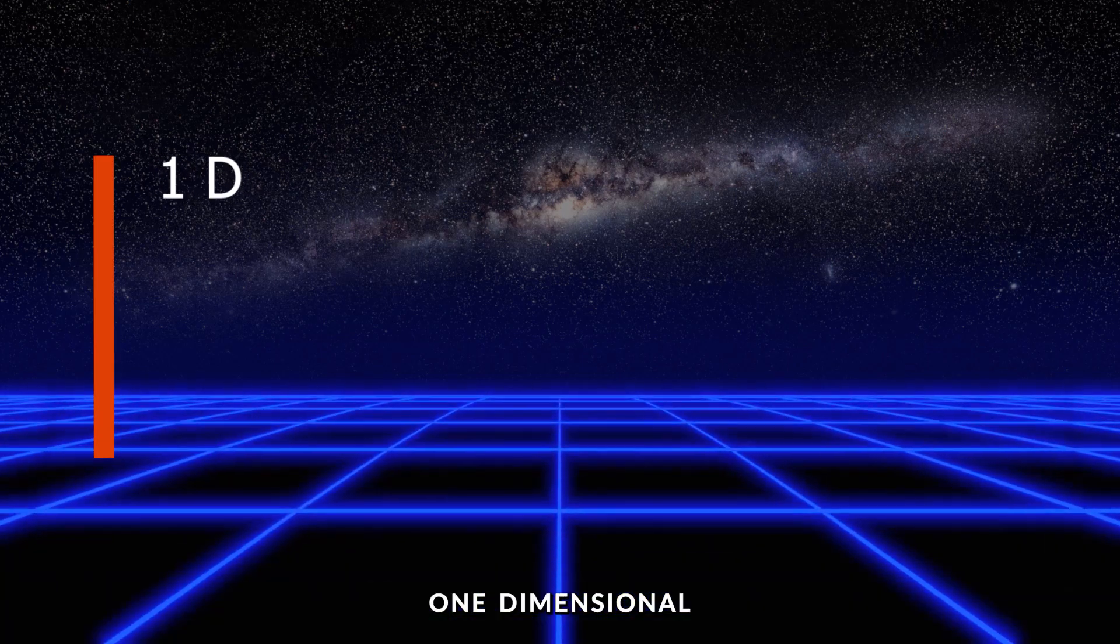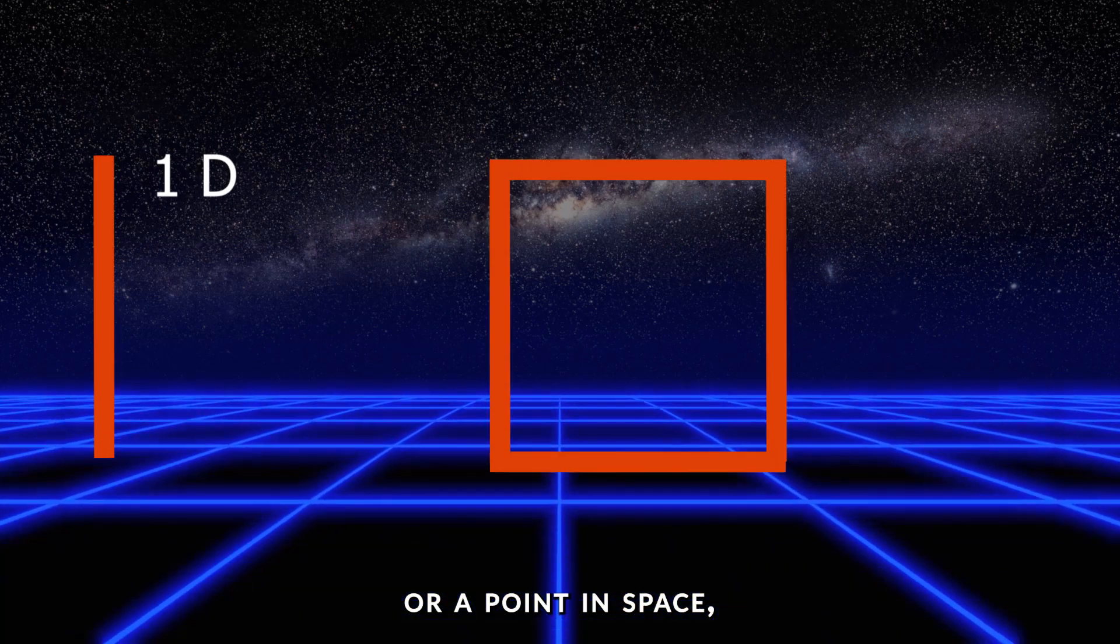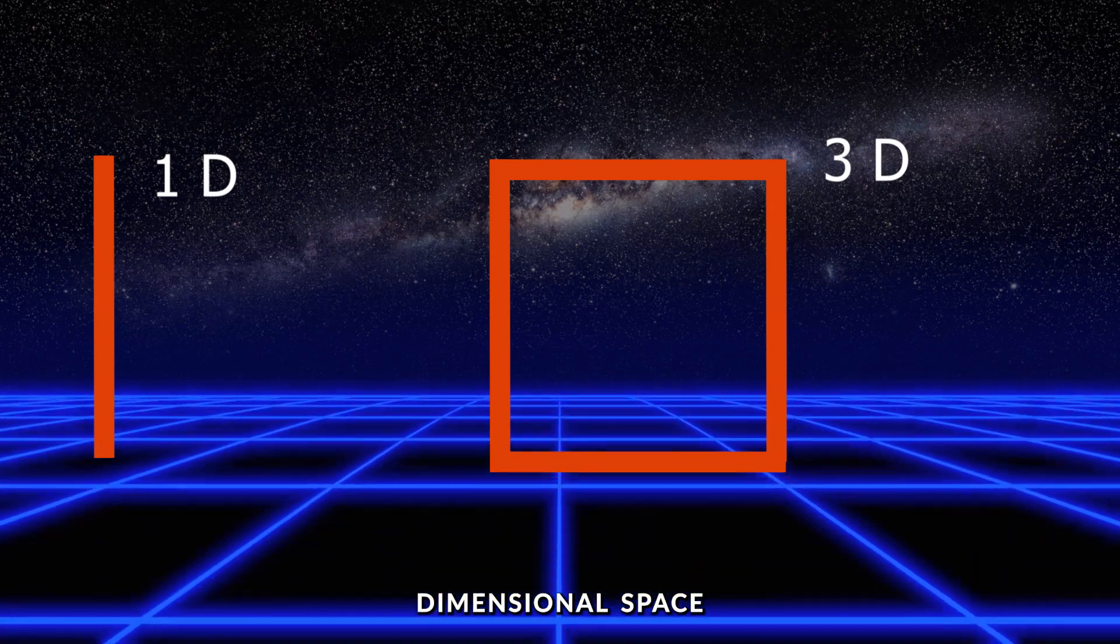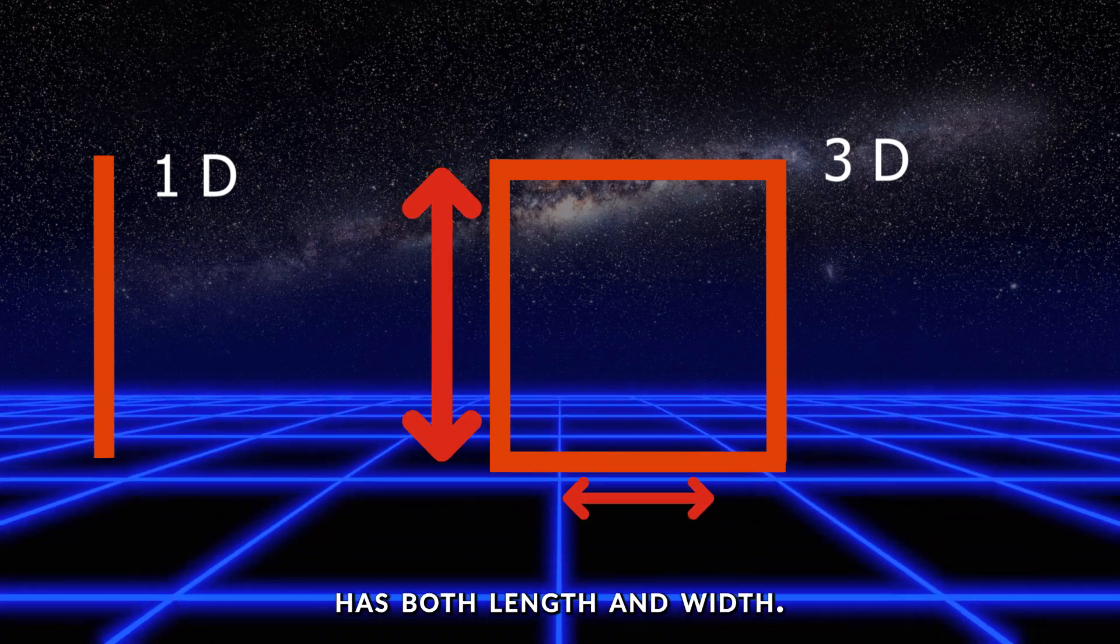Unlike a point on a line (one-dimensional) or a point in space (three-dimensional), a point in two-dimensional space has both length and width.